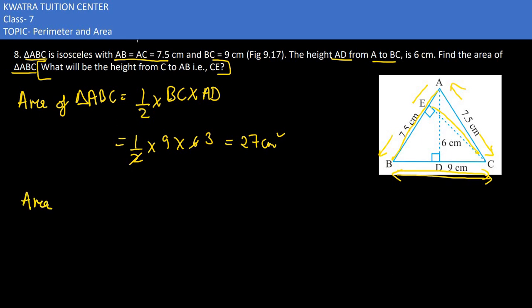So in the second one, area would be equal to half into base into height. Area is 27, half as it is, base is 7.5, and then height is EC or CE, whichever you prefer.